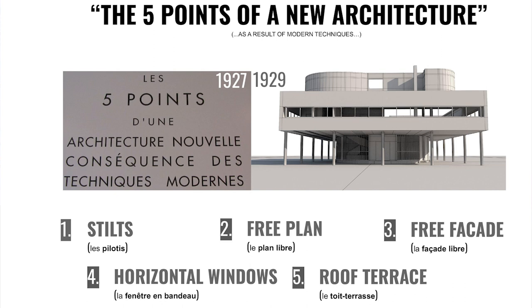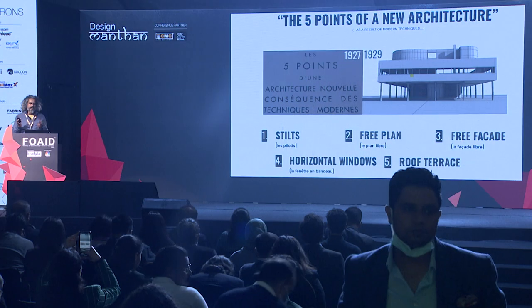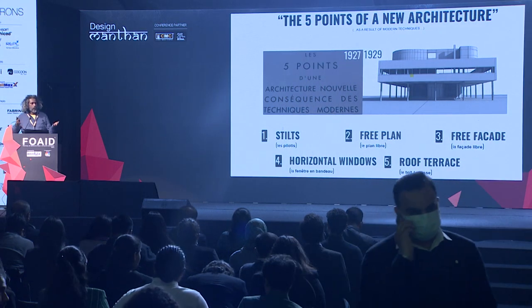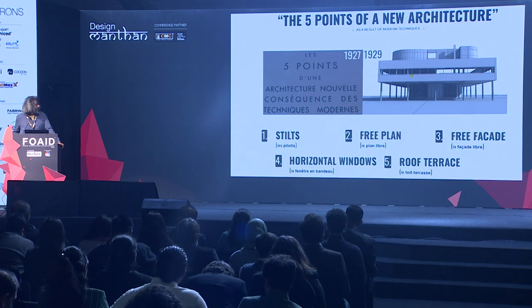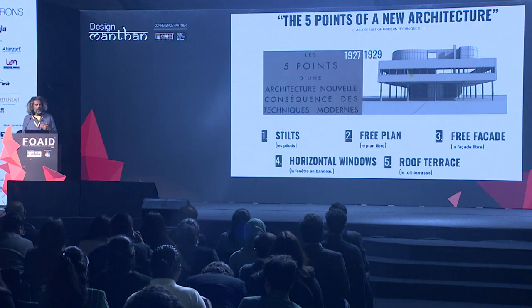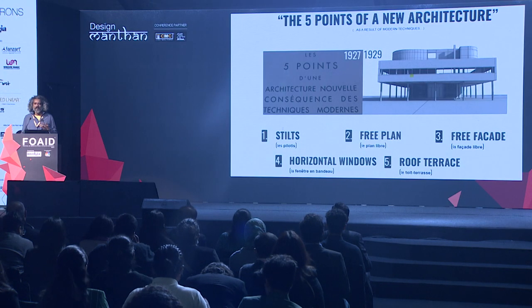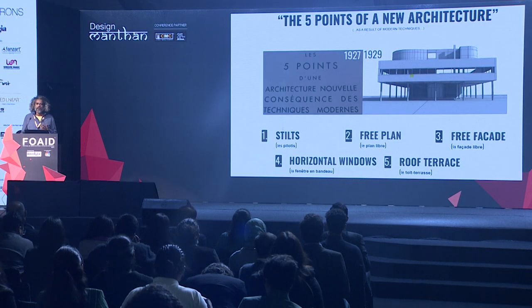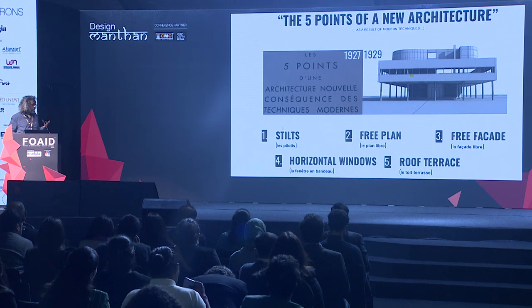The idea was that light, ventilation, and the views framed by the window were no longer restricted by the imperatives of load transfer from above. And finally, roof terrace — almost a hundred years after he wrote these five points, one doesn't realize how alien it was before then: especially in Europe, most roofs were sloping. So these were his five points.